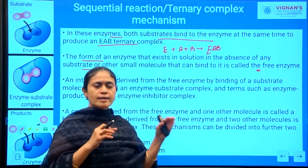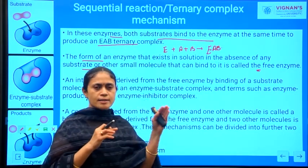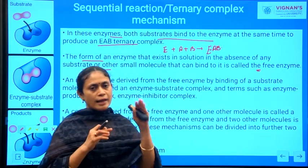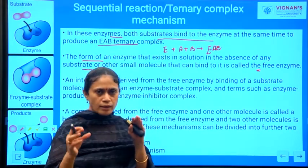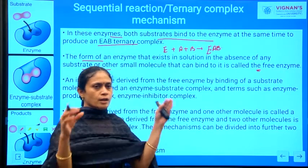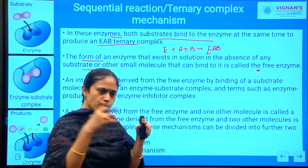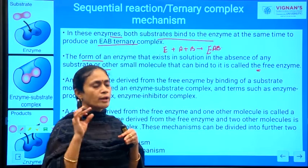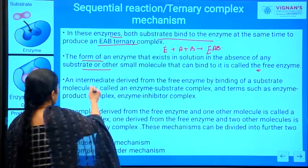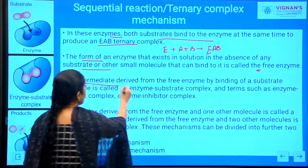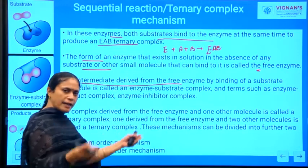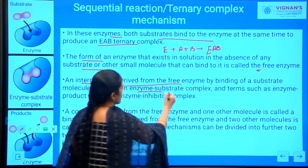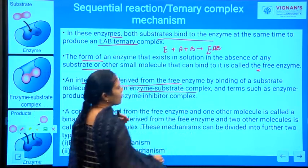What is free enzyme? Free enzyme is that enzyme to whose active site no substrate has been attached. If some substrate was bound to the active site of an enzyme, we call it bound enzyme. An intermediate derived from the free enzyme by binding with the substrate molecule is called the enzyme-substrate complex.